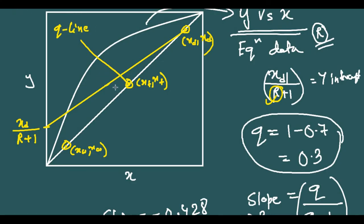Now that we have the Q line, we construct the bottom operating line passing through XW XW and meeting at the intersection of the Q line and the top operating line. We then erase the extra portion of the top operating line beyond this intersection, leaving only the relevant segments of all three lines.